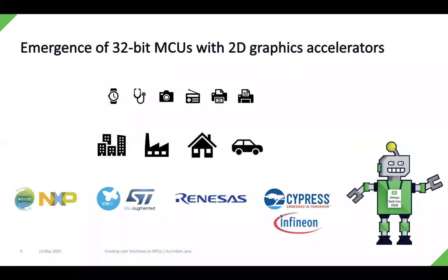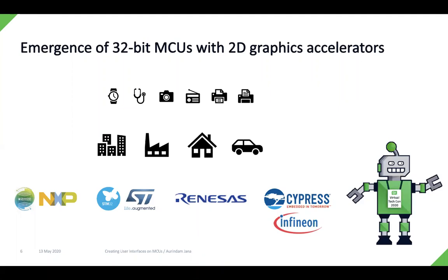That's one of the reasons why 32-bit microcontrollers with 2D graphics accelerators are becoming quite popular. There are many microcontroller vendors that have recently launched new ranges of these devices. Some of the ones we're mentioning here are NXP, ST, Renesas, and Cypress — Cypress has now been acquired by Infineon. All of these vendors provide microcontrollers covering a wide range of use cases, from smart wearables to consumer devices, industrial devices, and automotive scenarios.